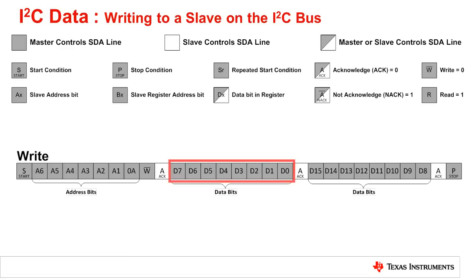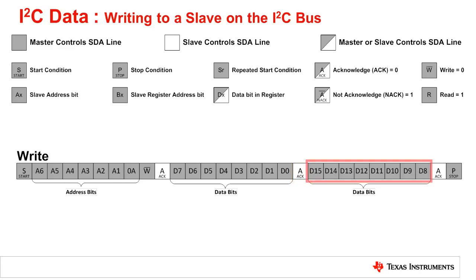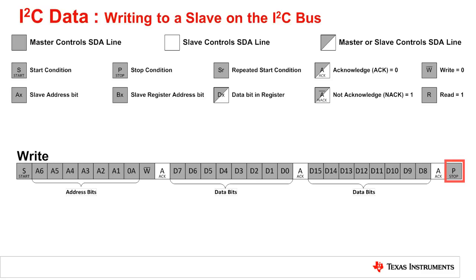The master will then send eight consecutive register bits, or the byte, and the slave will then acknowledge the receipt of those bits by generating an ACK. The master then sends a second consecutive set of bits, the second byte, then the slave will acknowledge again, letting the master know it has received it. The master then generates the stop condition to terminate the transaction.